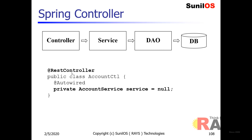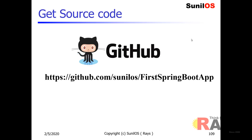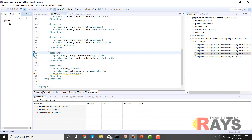You need a controller that provides REST endpoints. So here we have created a REST controller using the @RestController annotation. This REST controller uses the service to handle business operations. The flow is: controller calls service, service calls DAO, and DAO manipulates the database. You can get the source code of this example application from my GitHub account at github.com/SunilOS/first-spring-boot-app.